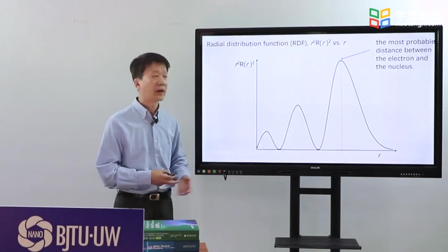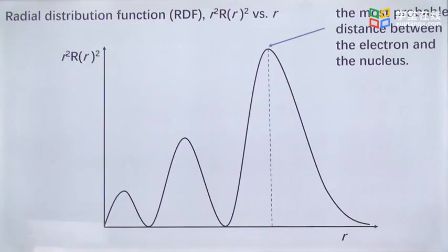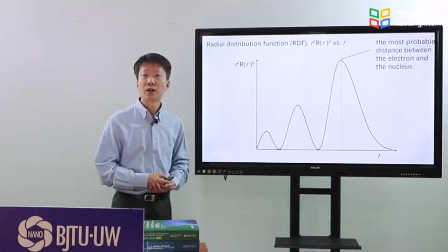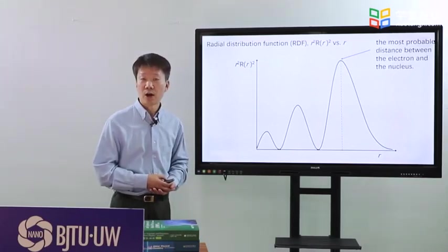Another plot of radial distribution function, RDF, shown here, shows us the most probable distance between the electron and the nucleus. We call it radius of the orbit.